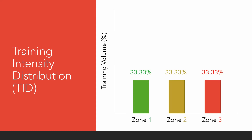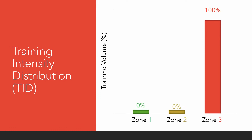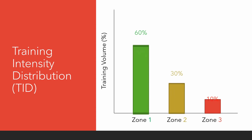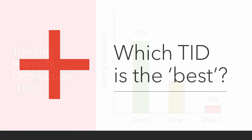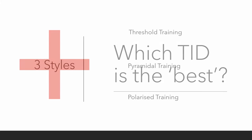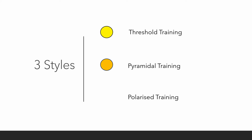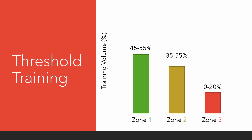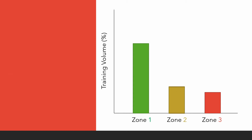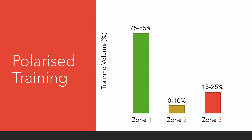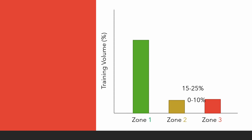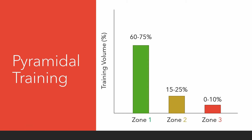Should you split your training equally between all 3 zones? Should you do all your training in zone 3? How about a mixture of all 3 zones? There are 3 primary TIDs: threshold training, pyramidal training, and polarised training. Threshold training splits the majority of training volume into zones 1 and 2, with very little done in zone 3. Polarised training devotes a large amount of training to zone 1, very little to zone 2, with a small emphasis on zone 3. Pyramidal training devotes most of the training to zone 1, less to zone 2, and even less to zone 3 — it gets its name from its shape.